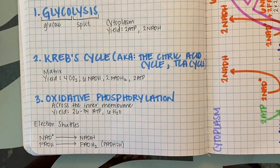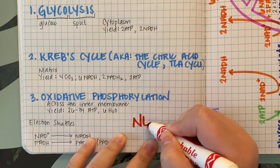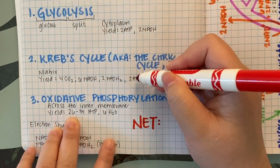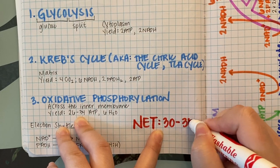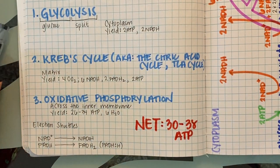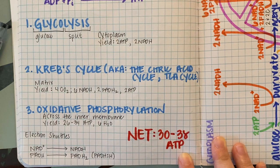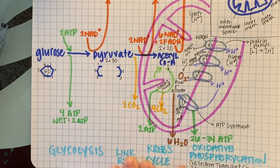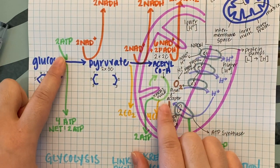The net yield from one glucose molecule is a range of 30 to 38 ATP molecules. All that ATP will be used to power mechanical processes, chemical processes, transport processes, and more. To summarize: we sequentially break down glucose, releasing electrons two pairs at a time, releasing free energy, and creating ATP.